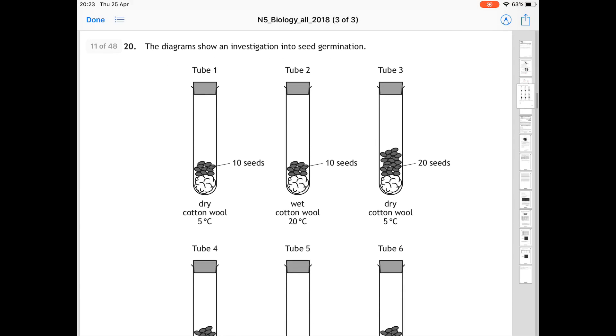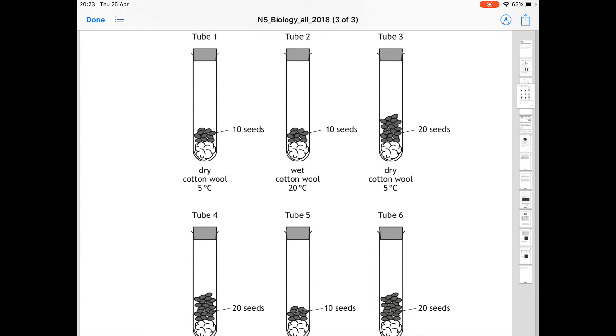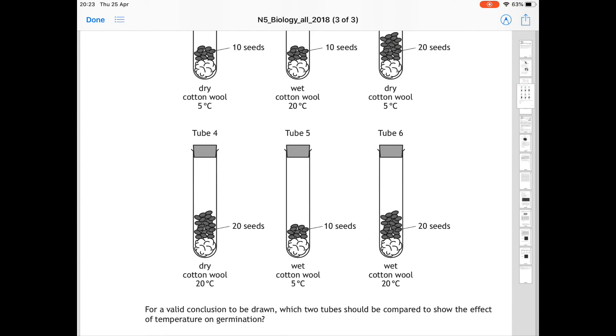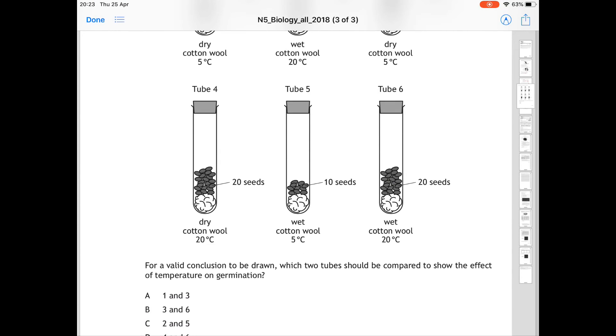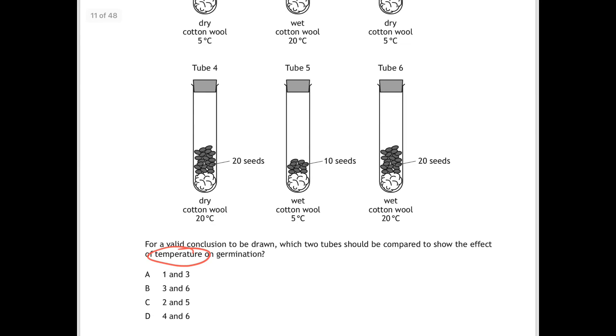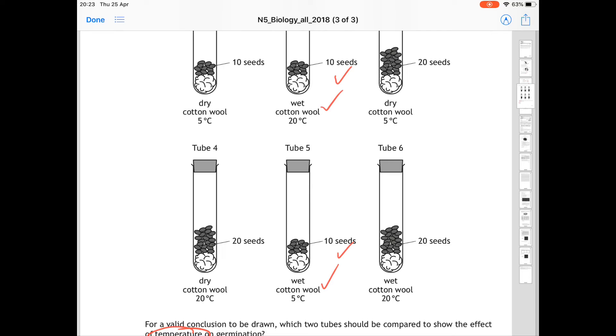Question 20 is a really good example of an experimental design question. It shows you the diagrams showing investigation into seed germination. There are six tubes with some different conditions going on. For a valid conclusion to be drawn, which two tubes should be compared to show the effect of temperature on germination? So it's really important that the only thing that is being changed, the only variable being changed in this set of six test tubes should be temperature. So if we compare them, then two and five, so answer C would be the correct one, because between tube two and tube five, there are 10 seeds in both. They both have wet cotton wool. The only thing that has changed is the temperature. So for example, tube two is at 20 degrees and tube five is at five degrees. If you compare the other tubes, some of them have different numbers of seeds, or some of them are wet cotton wool and dry cotton wool. We are only looking for the one which changes in temperature, which is answer C.